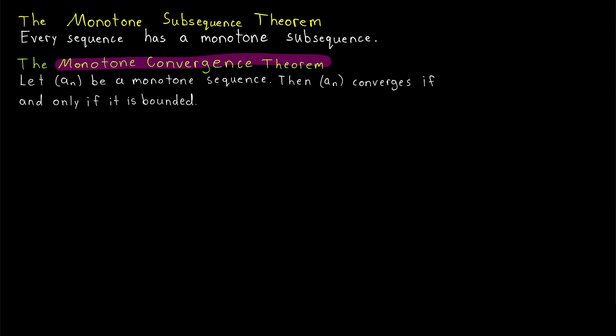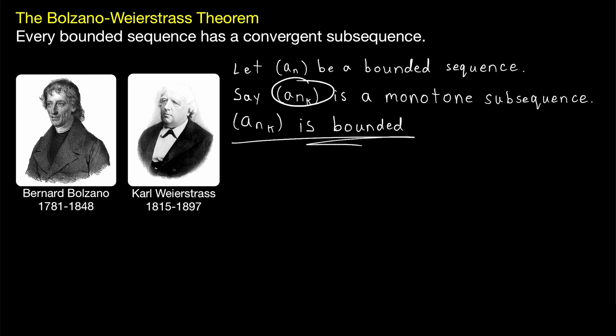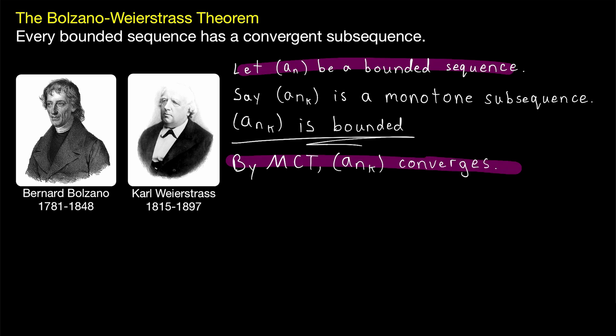Now we can apply the monotone convergence theorem. Remember, the monotone convergence theorem says for a monotone sequence, it converges if and only if it is bounded. Our monotone subsequence A_N_K is bounded, and so it must converge. So there we are. By the monotone convergence theorem, our subsequence converges, and so we found that any bounded sequence must have a convergent subsequence. Pretty darn easy.